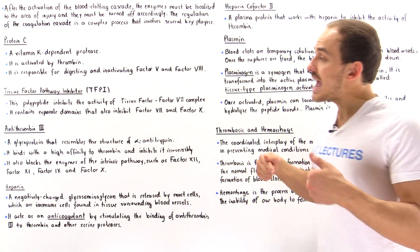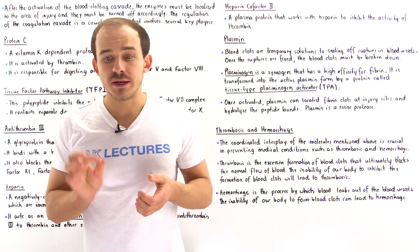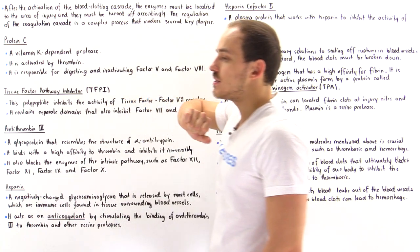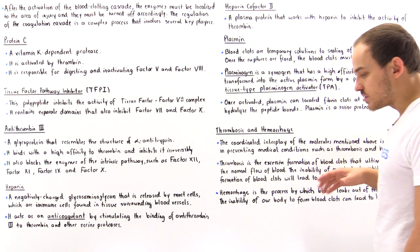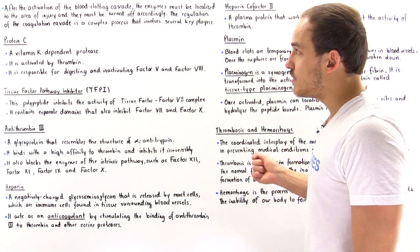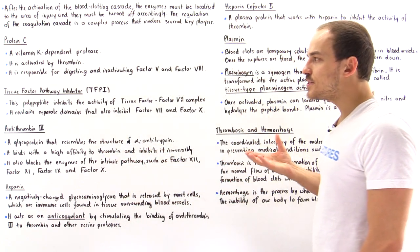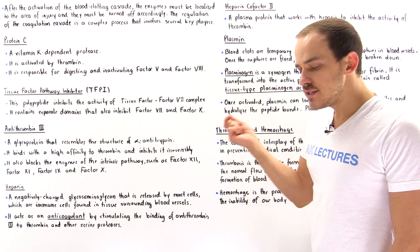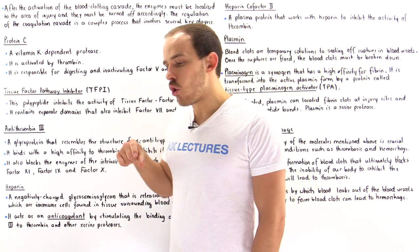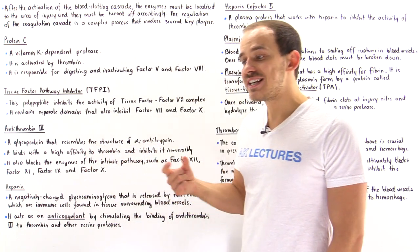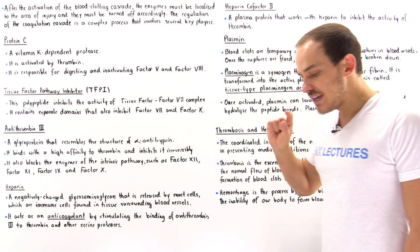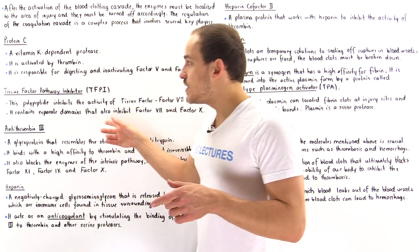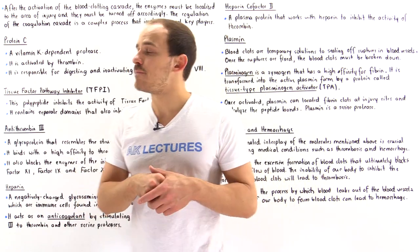Previously we discussed the activation of the coagulation cascade process. Now we're going to discuss the inhibition — how exactly do we downregulate and inhibit the different enzymes involved in the coagulation cascade? We'll discuss several important key factors that inhibit these enzymes. Let's begin with the molecule known as tissue factor pathway inhibitor, or simply TFPI. This is a polypeptide that ultimately binds onto a complex that is part of the extrinsic pathway, essentially blocking the extrinsic pathway from taking place.